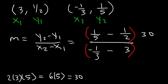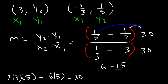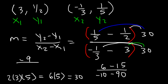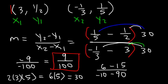Let's distribute. 30 times 1/5: 30 divided by 5 is 6. Half of 30 is 15. Now multiply the bottom part by 30 as well — whatever you do to the top, you must also do to the bottom. 30 times 1/3 is 10, but since we have negative 1/3, this is negative 10. 30 times negative 3 is negative 90. Now let's simplify: 6 minus 15 is negative 9, and negative 10 minus 90 is negative 100. A negative divided by a negative equals a positive, so this is 9 divided by 100. That is the slope of the line between these two points.